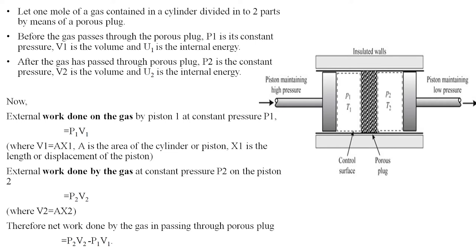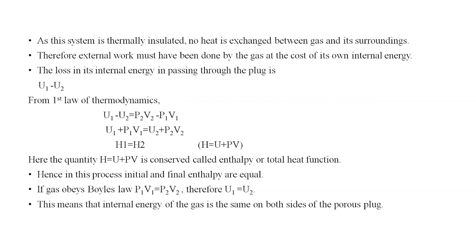Since the setup consists of an insulated tube, the system is thermally insulated and no heat is exchanged between the gas and its surroundings. Therefore, external work must be done by the gas at the cost of its own internal energy, resulting in a loss of internal energy given as u1 − u2. From the first law of thermodynamics we can write: u1 − u2 = p2·v2 − p1·v1.